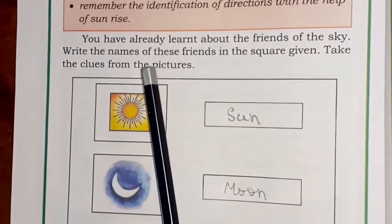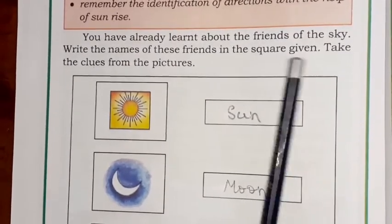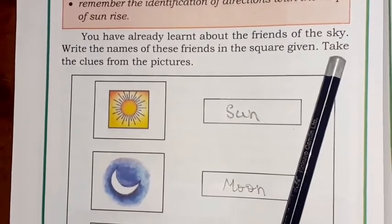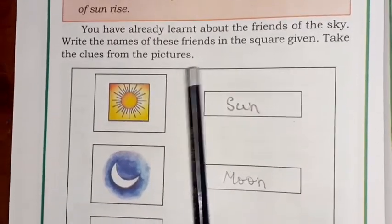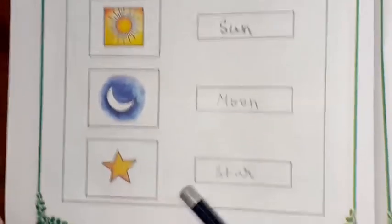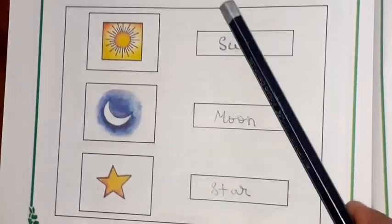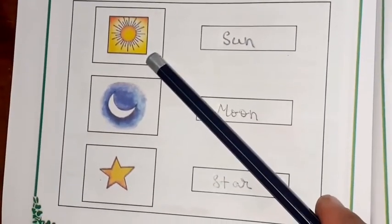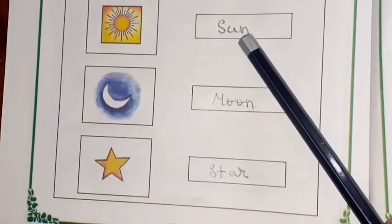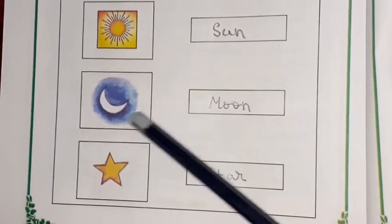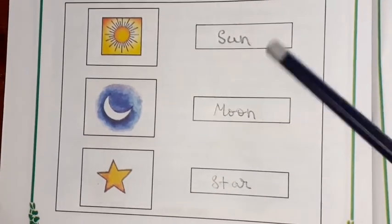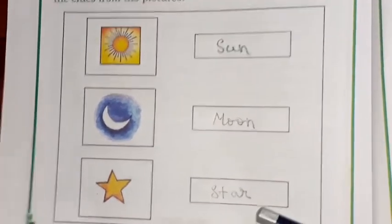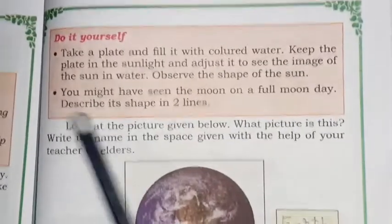Children, you have already learned about the friends of the sky. Write the names of these friends in the square box given, taking clues from the pictures. Here they have given some pictures — you have to write the names. This is the sun, this is the moon, and this is a star. Write them in the box.